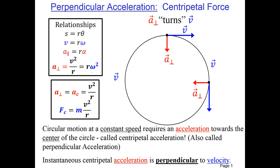These two expressions are the same thing — we're just replacing the velocity with the radius times omega. So we can find the acceleration required to keep this object turning, and the force is then going to be this acceleration times the mass. So the centripetal force is going to be the mass times the velocity squared divided by the radius of curvature.